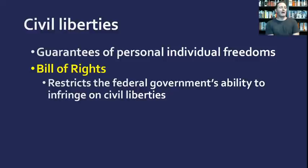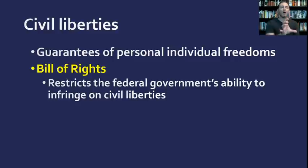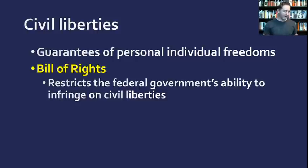The Bill of Rights is where we find our list of civil liberties — specifically the ones the federal government can't take away from us. Originally the Bill of Rights only protected people from the federal government. If you think about the very first words of the First Amendment, it says 'Congress shall make no law' — it doesn't say everyone has freedom of speech. What it says is Congress cannot make a law taking away your freedom of speech, religion, or the other rights we have.